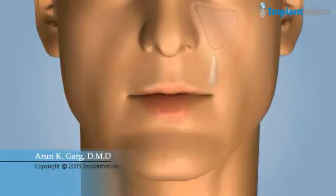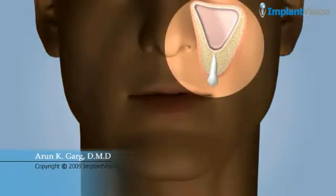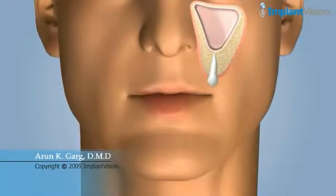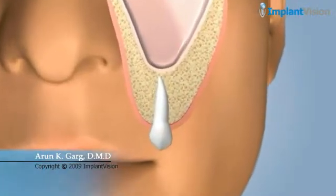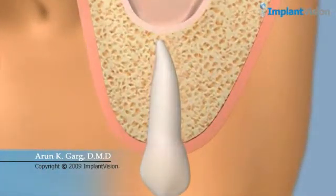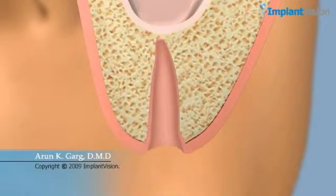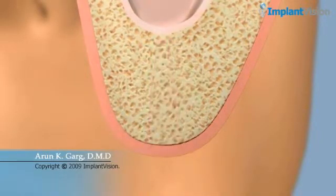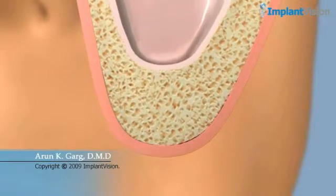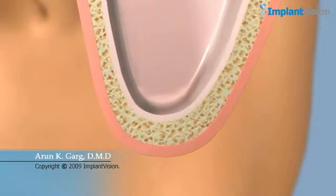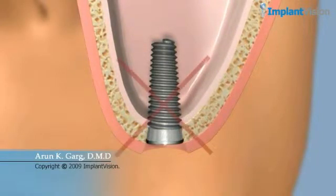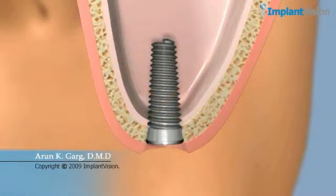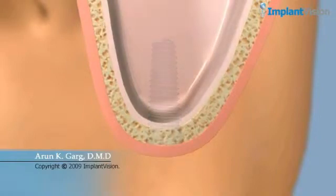The maxillary sinuses are located in the cheekbones below your eyes. Tooth loss below the sinus leads to bone loss, and over time the sinus will expand into the area previously occupied by bone and teeth. If a dental implant is placed into inadequate bone, it will move, shift, and fail because there isn't enough stability to withstand forces of biting and chewing.